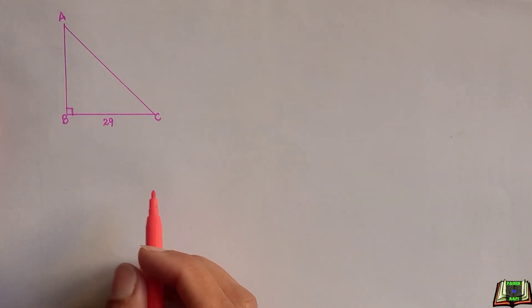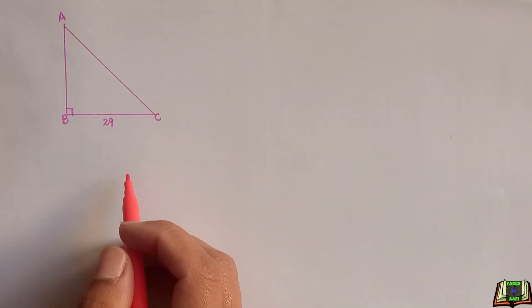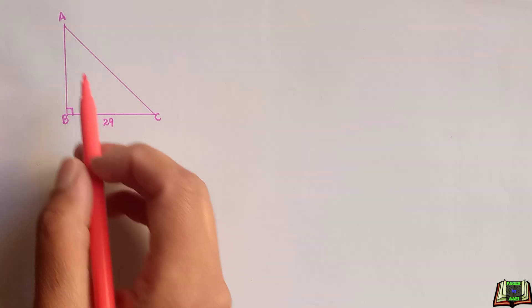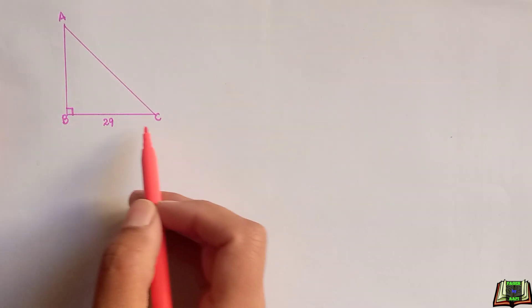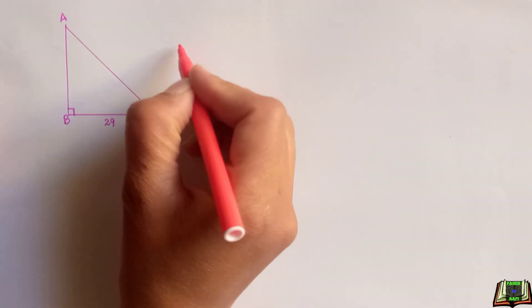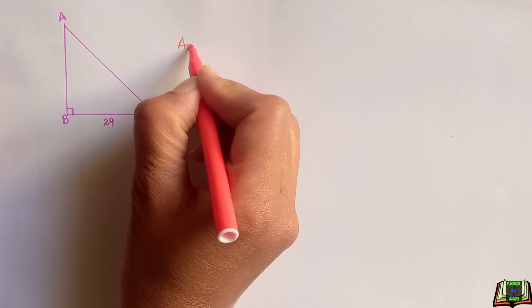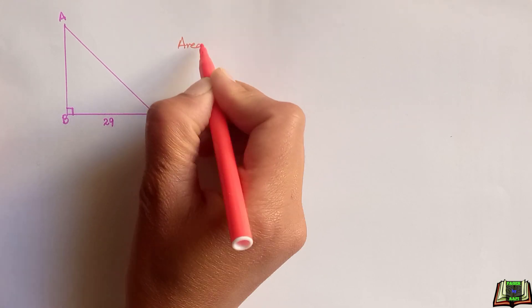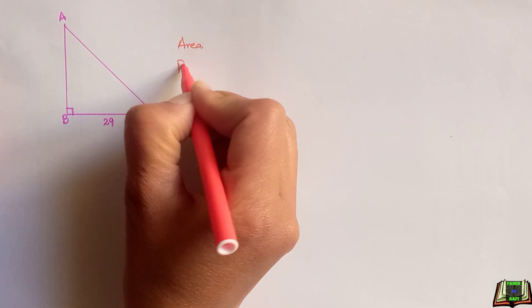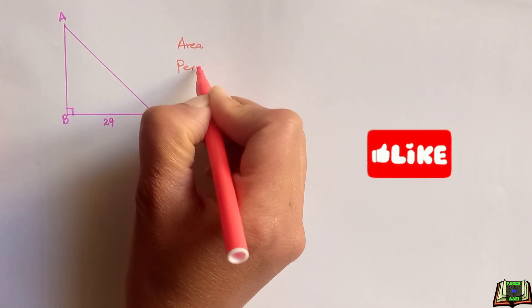Welcome, and hope you are doing well. Today we have a trigonometry question where a right angle triangle ABC is given. We have to find out the area and perimeter of this right angle triangle.